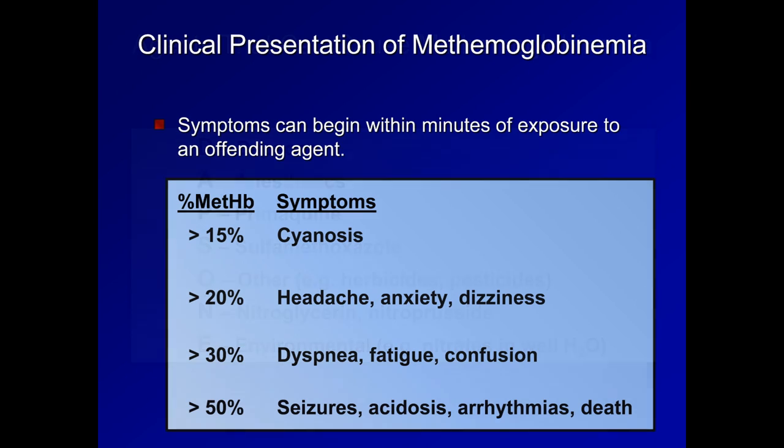The presentation of methemoglobinemia can start within minutes of exposure to an offending agent. Symptoms are largely dependent upon methemoglobin concentration. Once methemoglobin levels are above 15%, the patient will begin to appear cyanotic, irrespective of the actual levels of oxyhemoglobin or deoxyhemoglobin. At 20%, the patient will develop headache, anxiety, and dizziness. At 30%, dyspnea, fatigue, and confusion. And finally, once above 50%, seizures, acidosis, arrhythmias, and if not rapidly corrected, death.